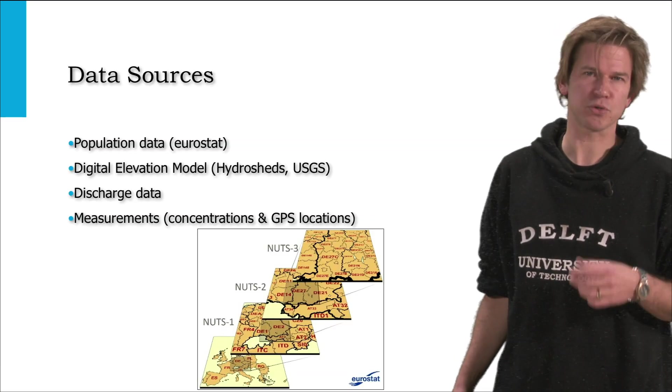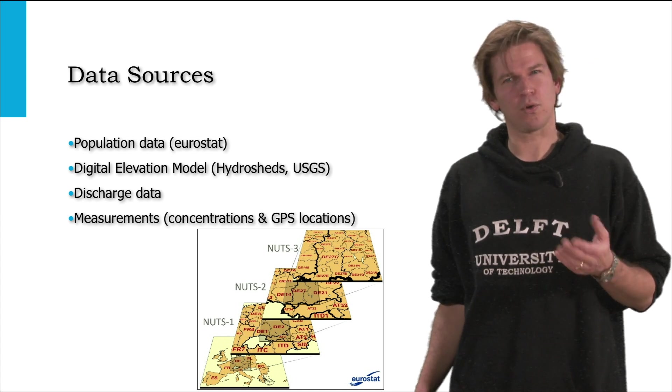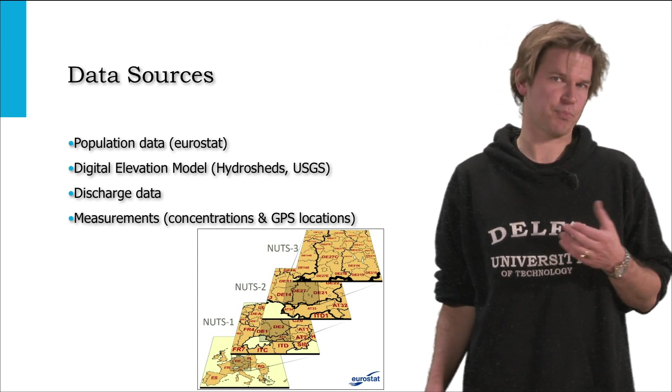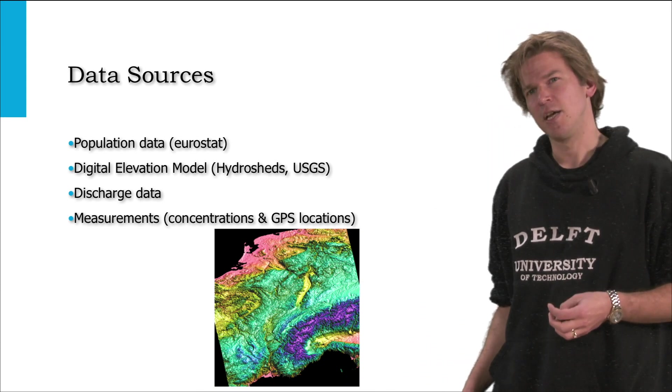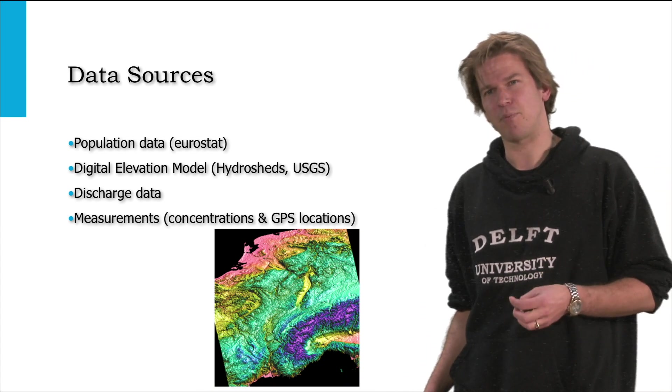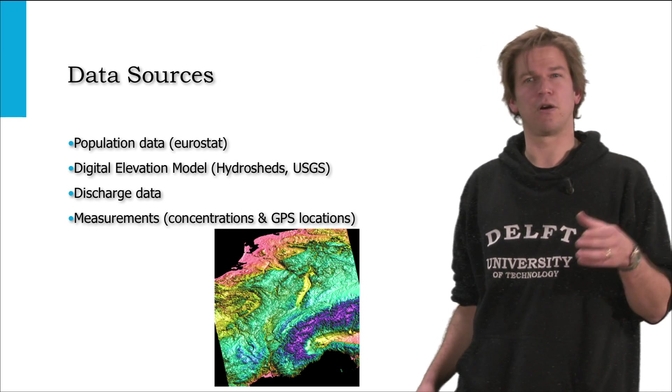To do that we used commonly available online data sources such as population data from Eurostat, a digital elevation model from HydroShets, and discharge data that is available from the authorities along the River Rhine.